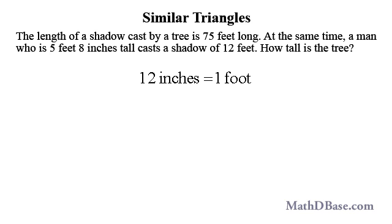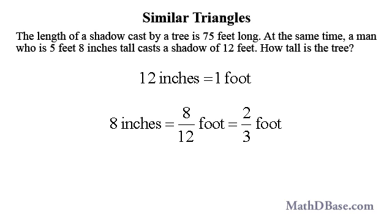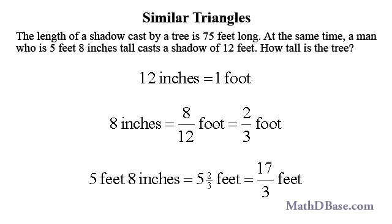Since there are 12 inches in one foot, 8 inches equals 8 twelfths of a foot, or 2 thirds of a foot, and 5 feet 8 inches are equal to 5 and 2 thirds feet, or 17 thirds feet, converting the mixed number into an improper fraction.